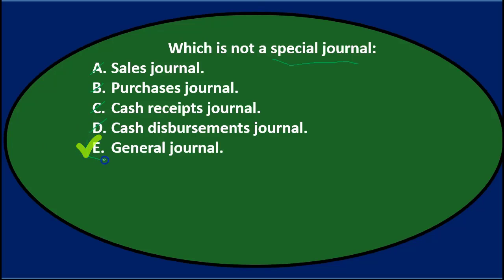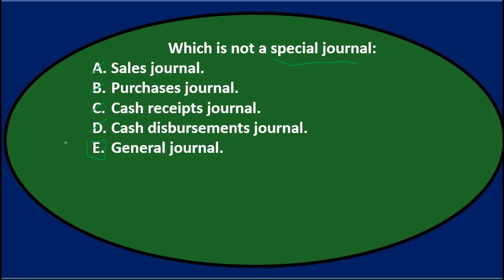By process of elimination it's going to be E: the general journal. The general journal is where we make normal journal entries. The special journals — sales, purchases, cash receipts, cash disbursements — are used so we don't have to enter a general journal entry for each transaction. If a transaction doesn't fit a special journal, it goes into the general journal. Final answer: E, the general journal.